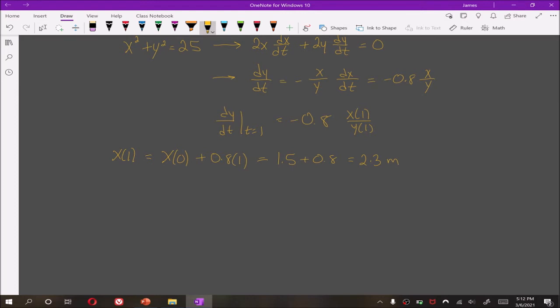We can now use Pythagorean Theorem to say, well then y(1) would be the positive square root of 25 minus x(1) squared, and the reason we keep it positive is because y is measuring height off the ground. If it was negative it'd be below the ground which is not possible. So this is the square root of 25 minus 2.3², and keeping to one decimal place this gives us 4.4 meters.